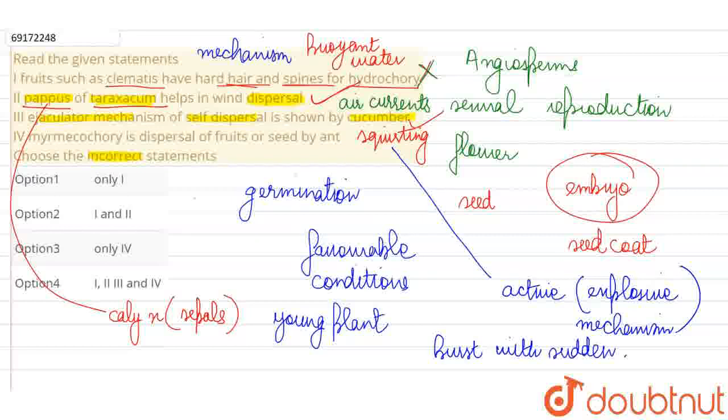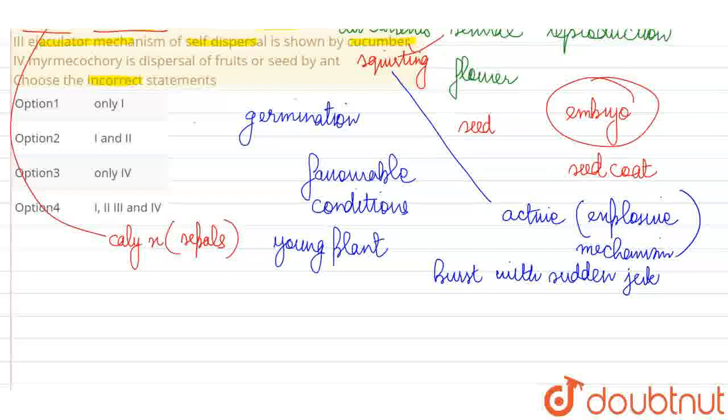It suddenly bursts and ejects its seeds. And forcefully, when it ejects its seeds, they go many feet away. In this case, without any agent's help, only with the fruit's sudden jerk, in an explosive manner, it disperses its seeds.